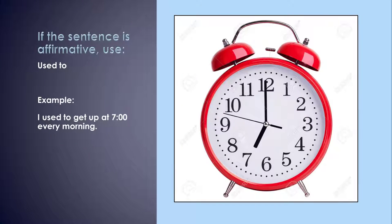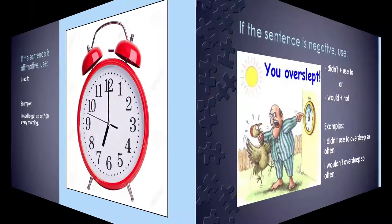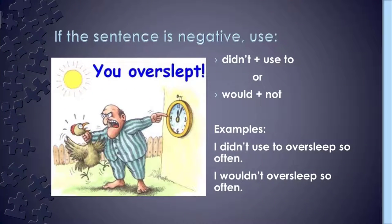If the sentence is affirmative, use used to. Example: I used to get up at 7 every morning. If the sentence is negative, use didn't plus used to, or would plus not. Examples: I didn't used to oversleep so often. I wouldn't oversleep so often.